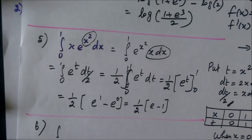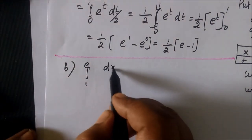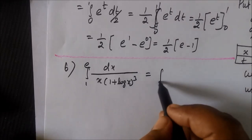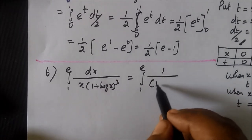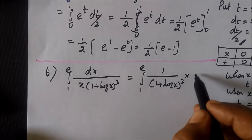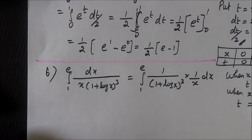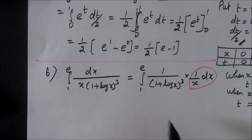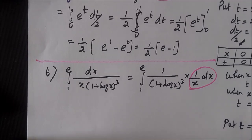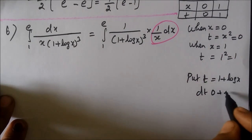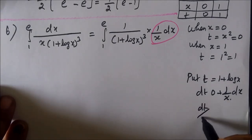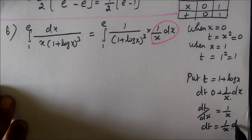Question 6: integral from 1 to e of dx divided by x(1 plus log x)³. We rewrite this as (1/(1 plus log x)³) times (1/x) dx. Put t equal to 1 plus log x. Then dt equals (1/x) dx, since the derivative of log x is 1/x.